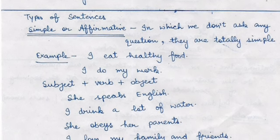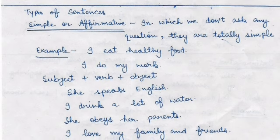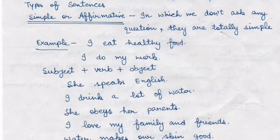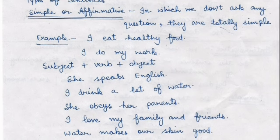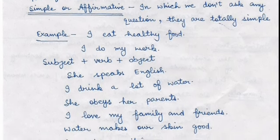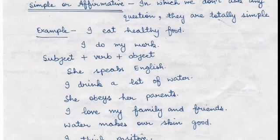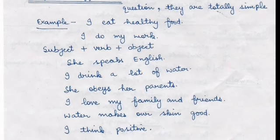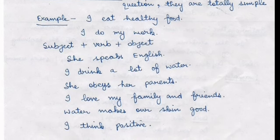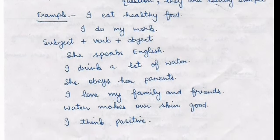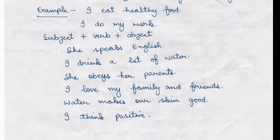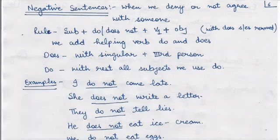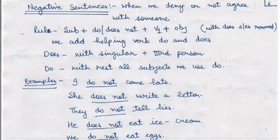Now let's look at types of sentences. First is the affirmative (simple) sentence, where we don't ask any question. The rule is the same: subject plus first form of verb plus object. If the subject is third person singular, add S or ES. Examples: 'I eat healthy food', 'I do my work', 'she speaks English', 'I drink a lot of water', 'she obeys her parents', 'I love my family and friends', 'water makes our skin good', 'I think positive always'.